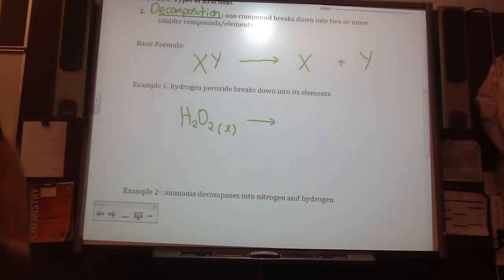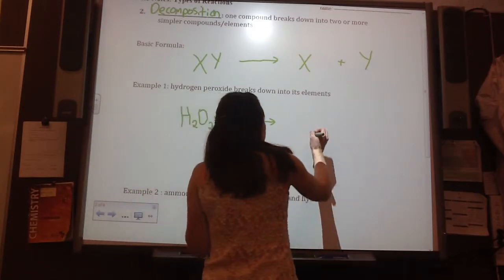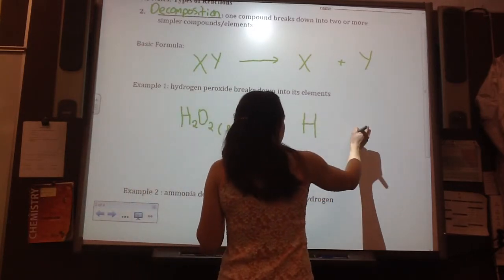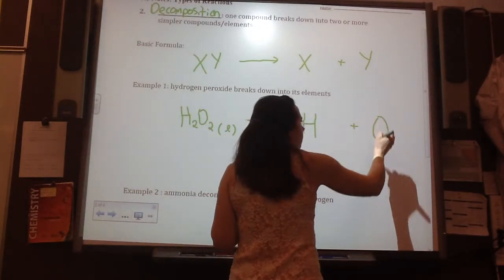Now here, you need to know what an element is. So, when we look at that compound, we need to be able to think, okay, what are the elements that make it up? So, what's one of them? Hydrogen and oxygen. So, we have hydrogen and oxygen.